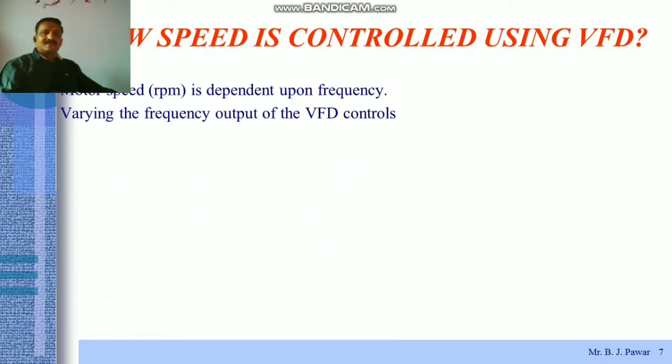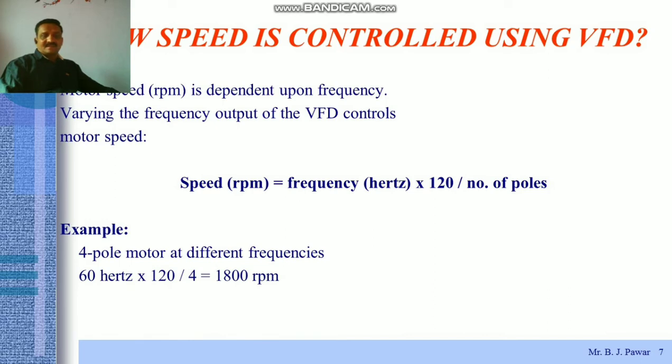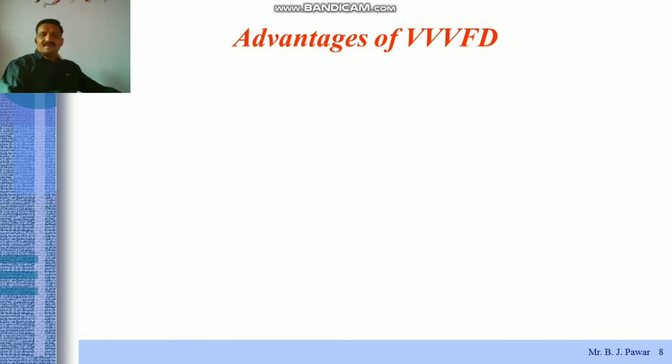So how the speed gets controlled using this VFD? Here few points are highlighted. Motor speed, that is RPM, is dependent upon the frequency of that AC bar. By varying the frequency output of that VFD, gets controlled. Then the motor speed, that is in RPM, which is equals to frequency in Hertz into 120 divided by number of poles. These are the derived equations which you already learned. So for example, suppose there is a 4-pole motor which is operated at different frequencies, that is by the output of that inverter. If it is of 60 Hertz, then that motor will get operated by 1800 RPM. That 4-pole, 3-phase induction motor will get operated by 1800 RPM. If the inverter output is set to 50 Hertz, then the speed of that motor will get changed to 1500 RPM like this. And similarly for 40 Hertz, then it will drop to 1200 RPM only.